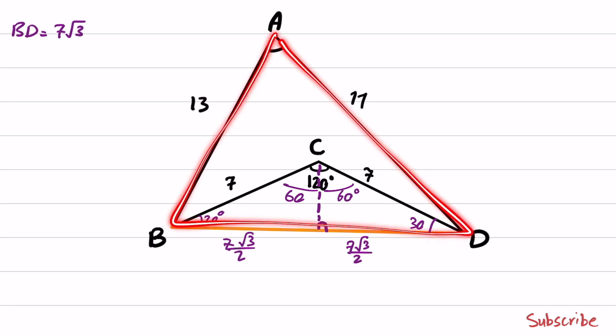Now back to ABD triangle. We have the three sides now. AB and AD is given, and we obtain the lengths of BD.